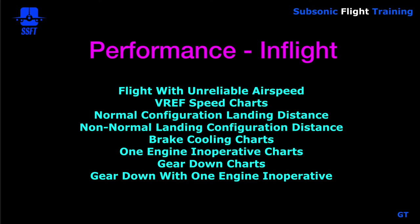In the performance in-flight section you have graphs and tabulated numerical tables for flight with unreliable airspeed, V-ref speed charts, normal configuration landing distance, non-normal landing configuration distance, brake cooling charts, one engine inoperative charts, gear down charts, and gear down with one engine inoperative charts.